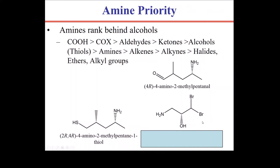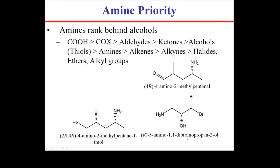The last nomenclature example has an alcohol, an amino group, and halogens. Halogens have rock-bottom priority. Alcohols have higher priority than amine groups. The longest chain connected to the alcohol has three carbons — propanol. At the one position there is a dibromo group, and at the three position is an amino group: 3-amino-1,1-dibromopropan-2-ol. There is one chiral center, labeled R.